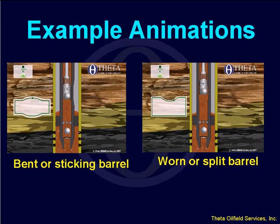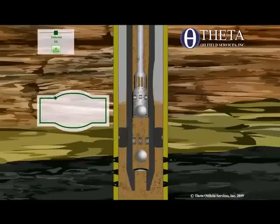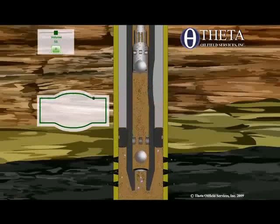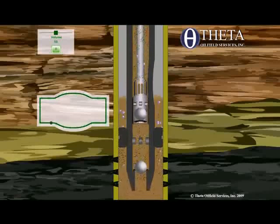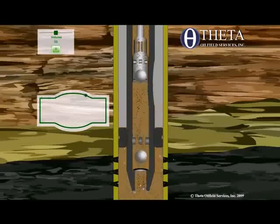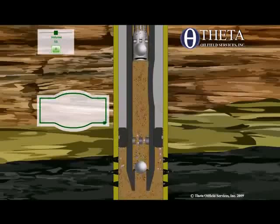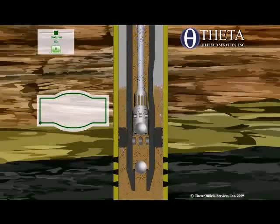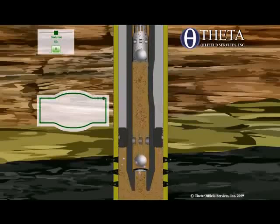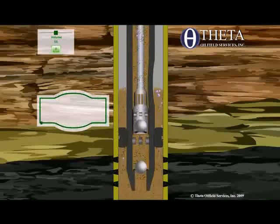If you have a bent or sticking barrel, you're going to see a card that looks like this. When the plunger goes past the bent or sticking section of the pump, it has a hard time squeezing through. The load will go up on the upstroke, and at the same spot in the pump barrel on the downstroke the load will go down. If you zoom in here, you can actually see that the plunger is being squeezed to the side as it goes through that narrow section.